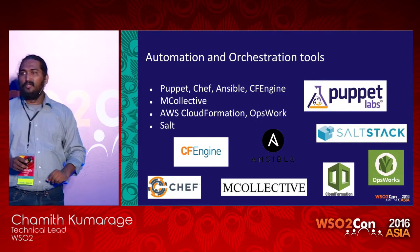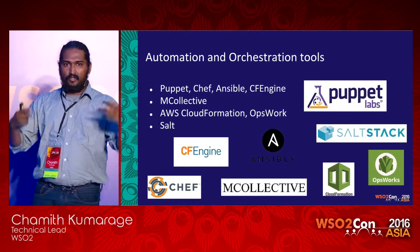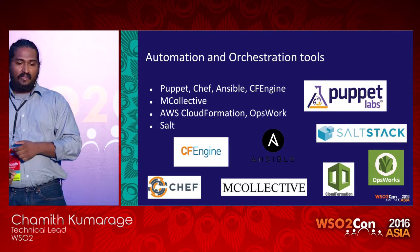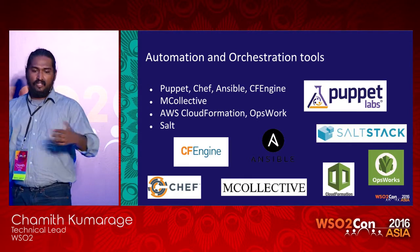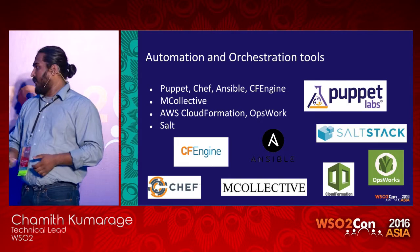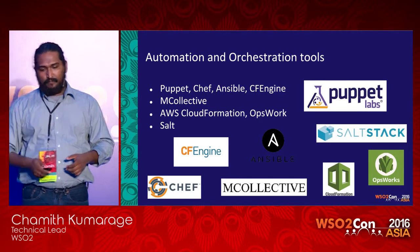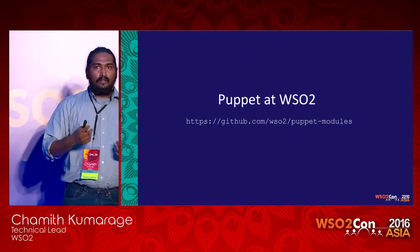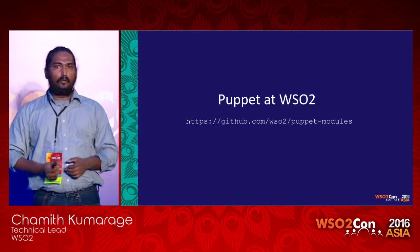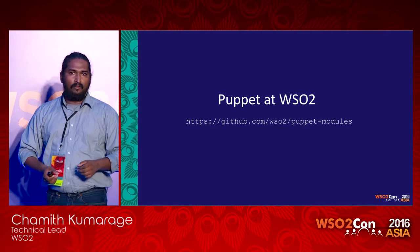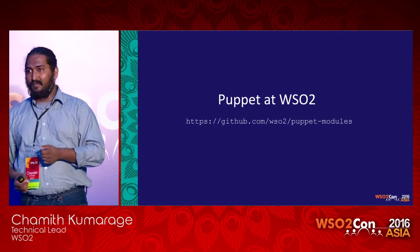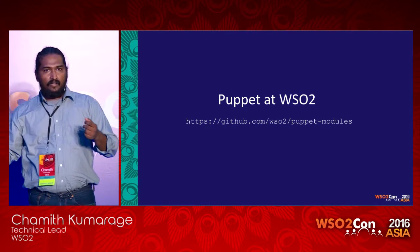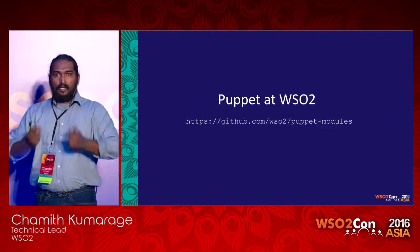If you are using AWS, CloudFormation and OpsWorks work together. OpsWorks is a Chef-based automation framework that AWS provides, and CloudFormation is their infrastructure orchestration platform. If you're a Python geek, you can use Salt from SaltStack. WSO2 uses Puppet internally for all automation work, and we have created Puppet modules for all WSO2 servers.